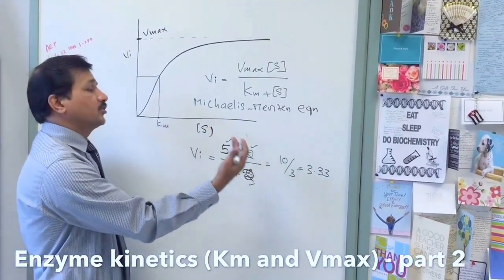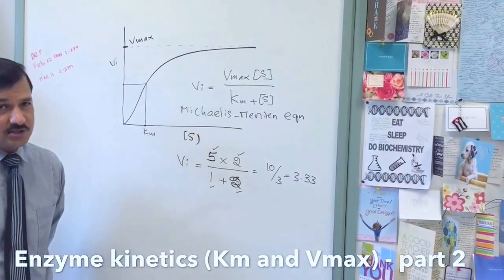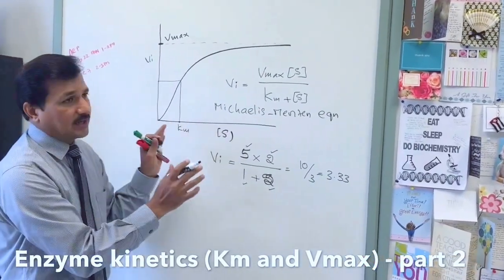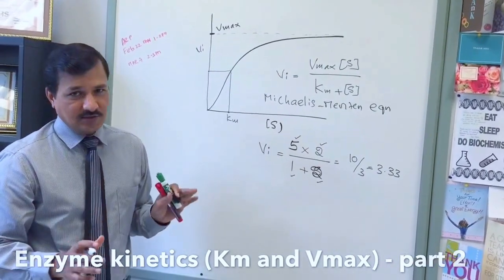This is how you can calculate velocity of the reaction of an enzyme or the transport capacity of a transporter. This is what we are going to do using Michaelis-Menten equation. Thank you.